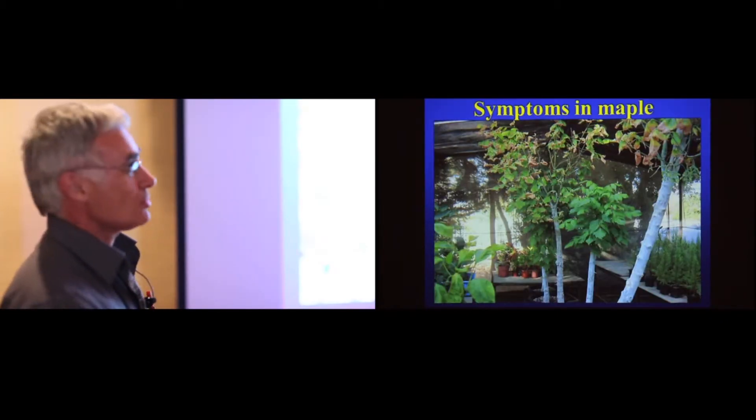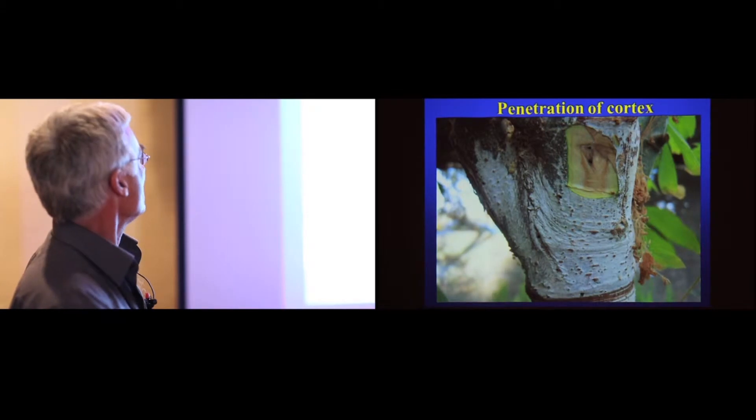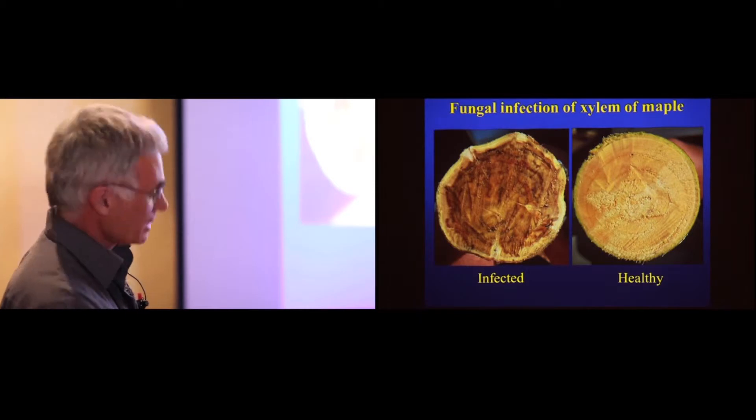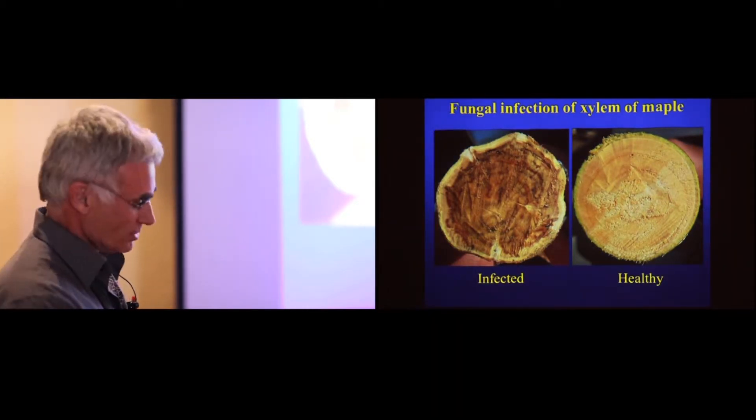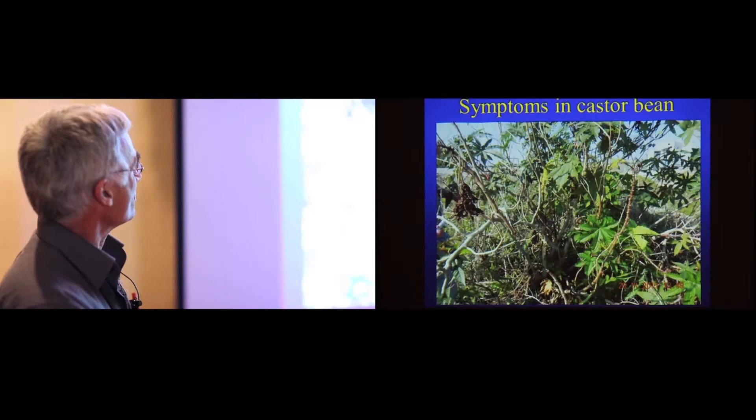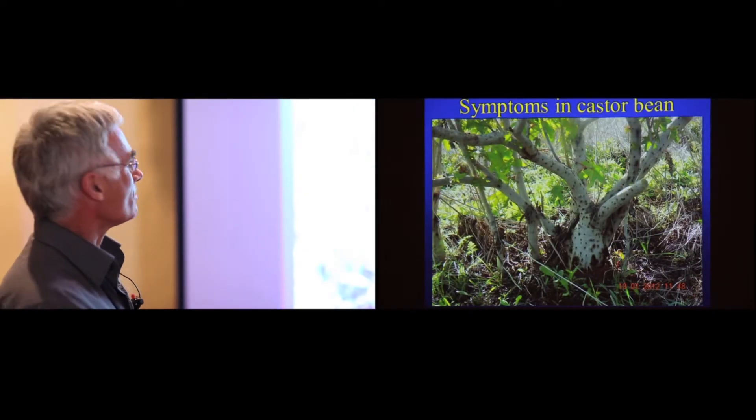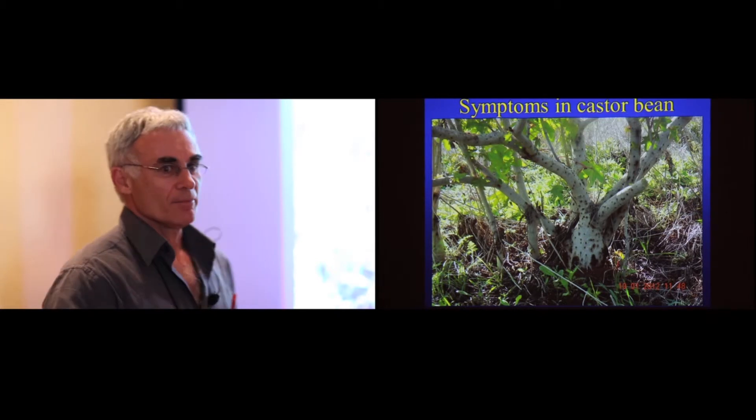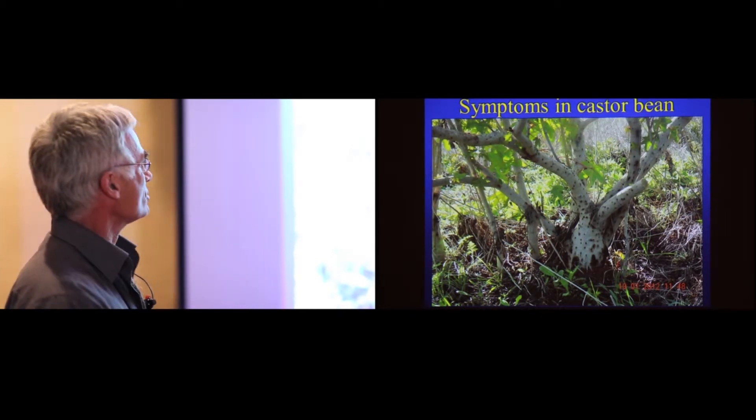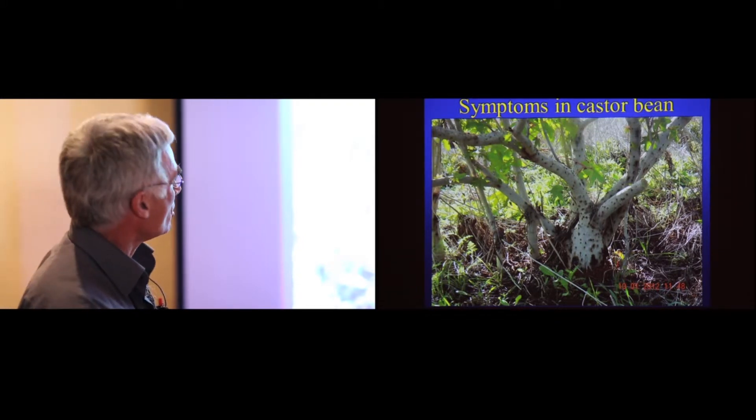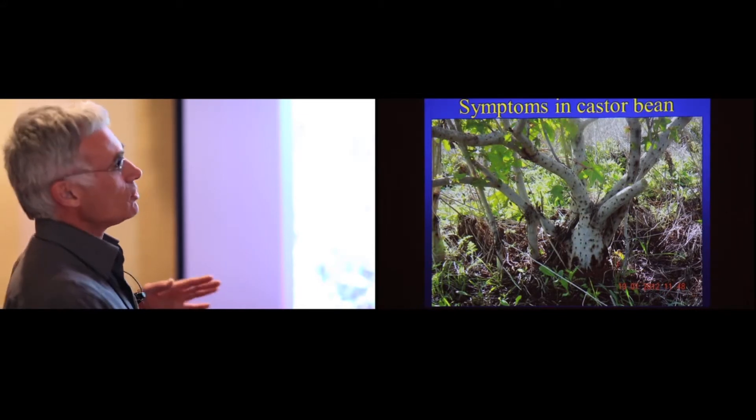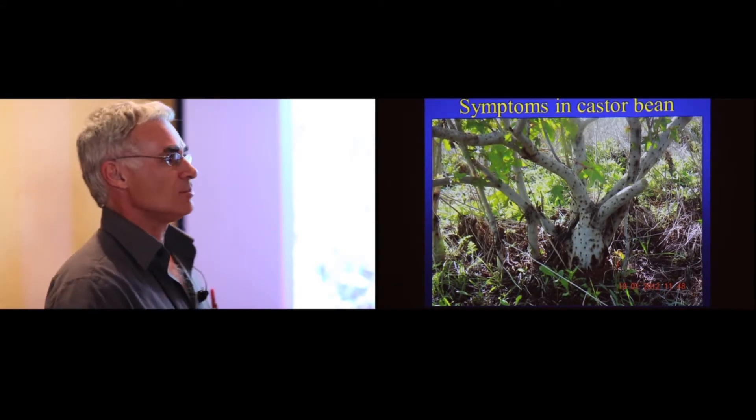Again, what you saw earlier on, infected maple is very susceptible to the pathogen. Here again, infections within the xylem. Castor bean, you saw that as well. Again, absolutely infected with lots of pock marks. The beetle develops here, the fungus develops, and you get mortality of the tree. All these hosts end up in tree mortality.